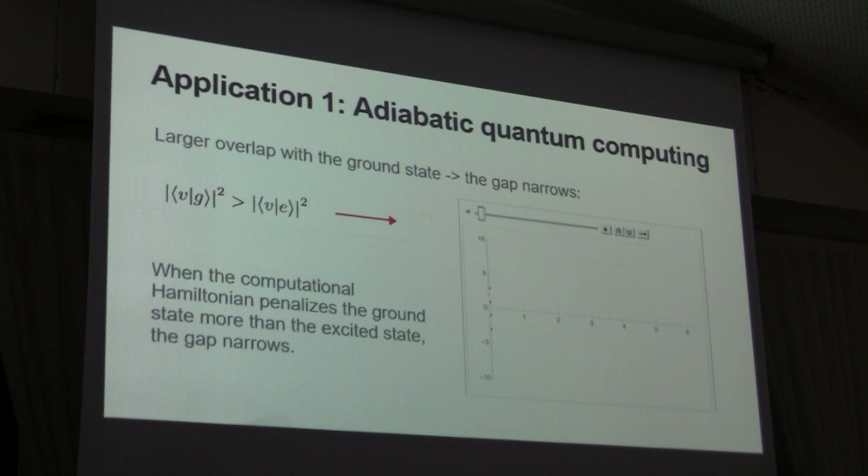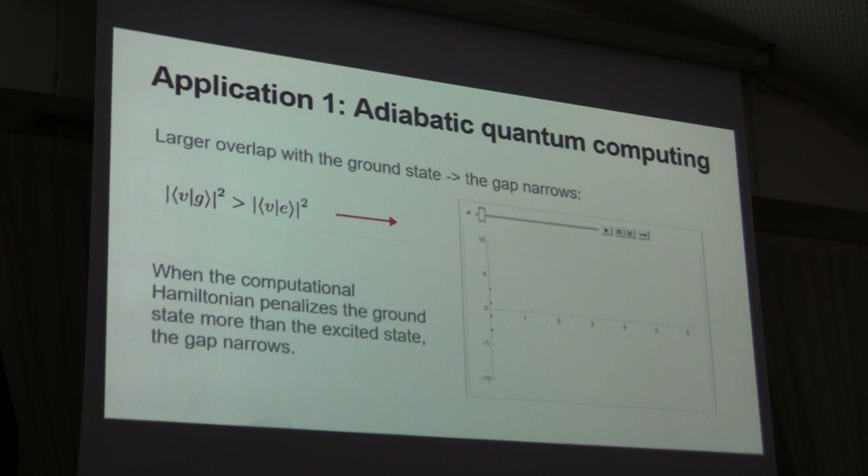Newton's Cradle teaches us that when the computation Hamiltonian penalizes the ground state more than the excited state, the gap narrows. This means we chose an ansatz where the final ground state is closer to one of our excited states than our ground state — so better choose a better ansatz.